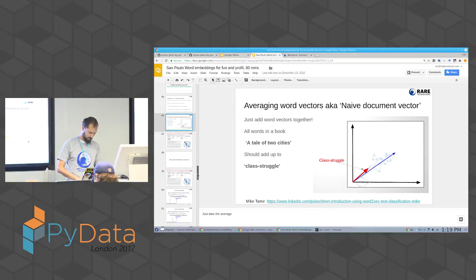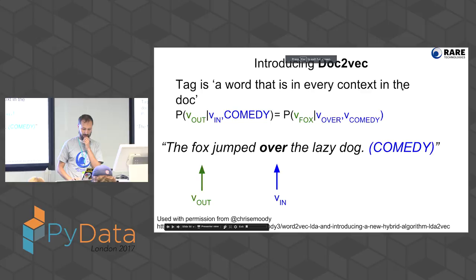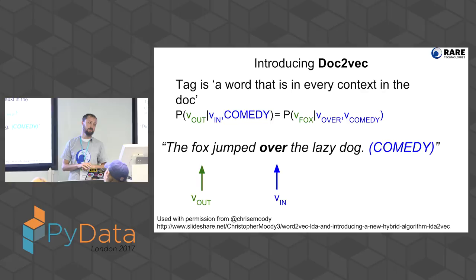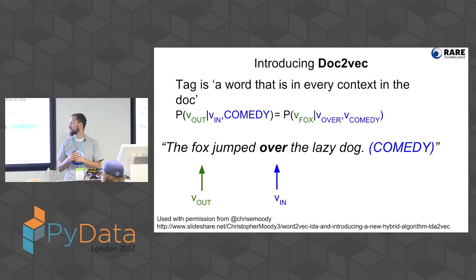This averaging approach has been quite naive. The average is kind of a silly thing to do. There's a more advanced way to get vectors for documents, and it's called Doc2Vec. It also came from Google, from the same authors that did the Word2Vec paper.